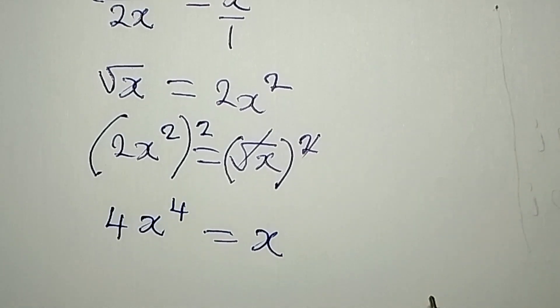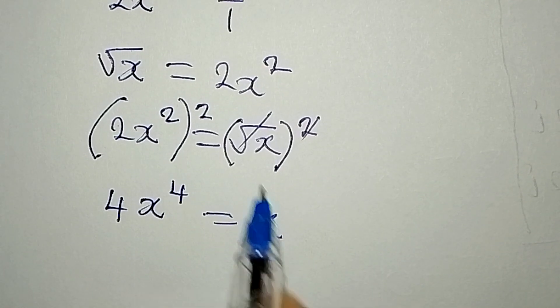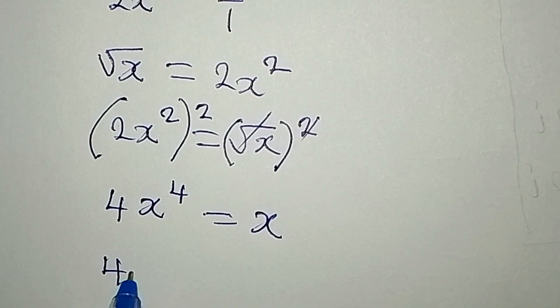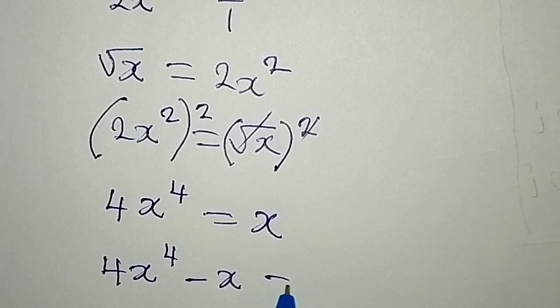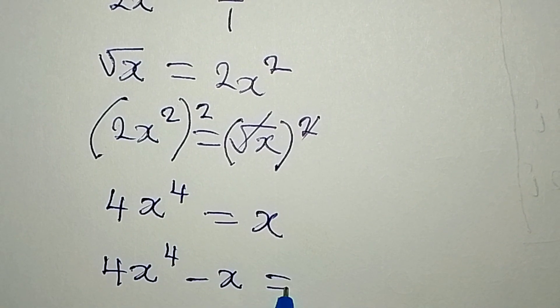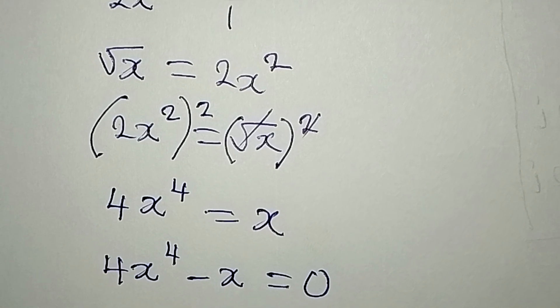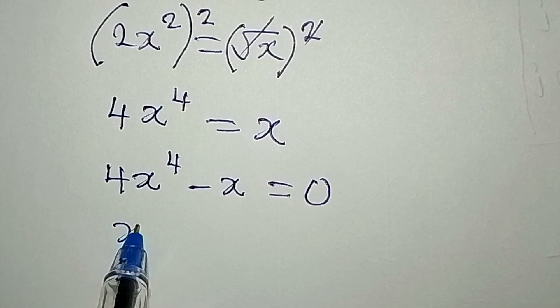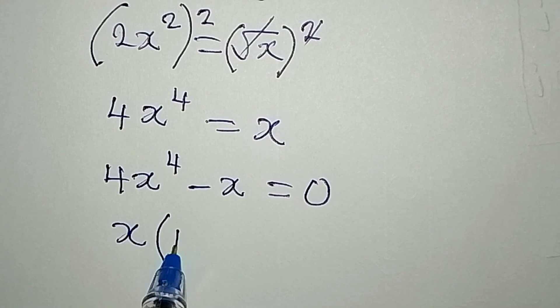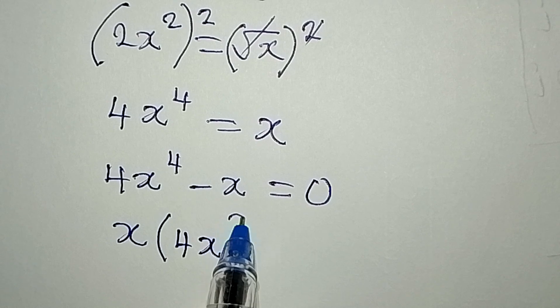Now I will bring x to the left, so we have 4x to the power of 4 minus x equal to zero because x is already on the left hand side. Now x is common to this, then here we have 4x to the power of 3 minus 1 in brackets, and equate this to zero.